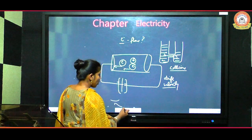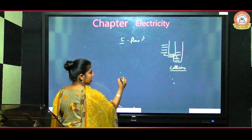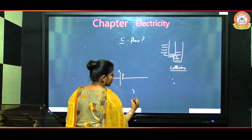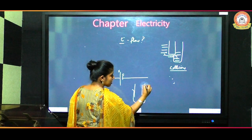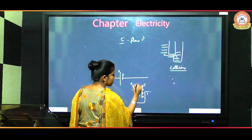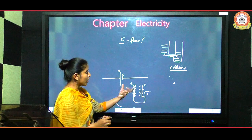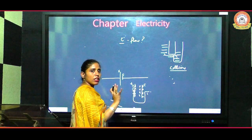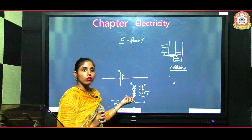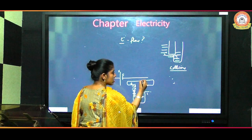When a cell is connected, the cathode has a lot of electrons while the anode has a deficiency of electrons. Because the number of electrons at the cathode is very high and there are none at the anode, there is a difference in potentials. So when we connect the cell to a wire, the electrons start flowing from the cathode towards the anode.